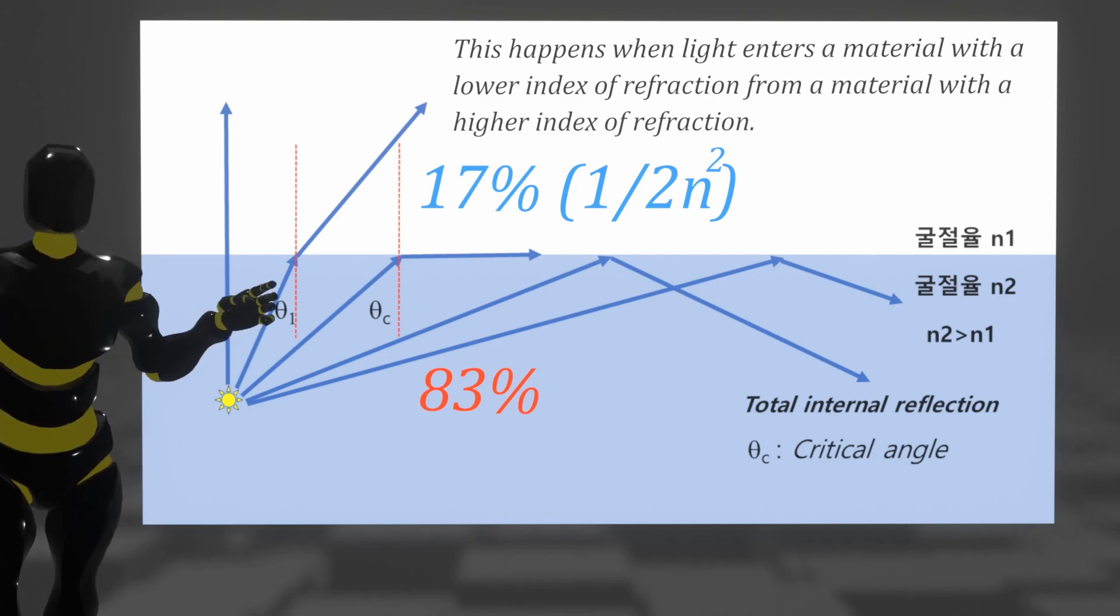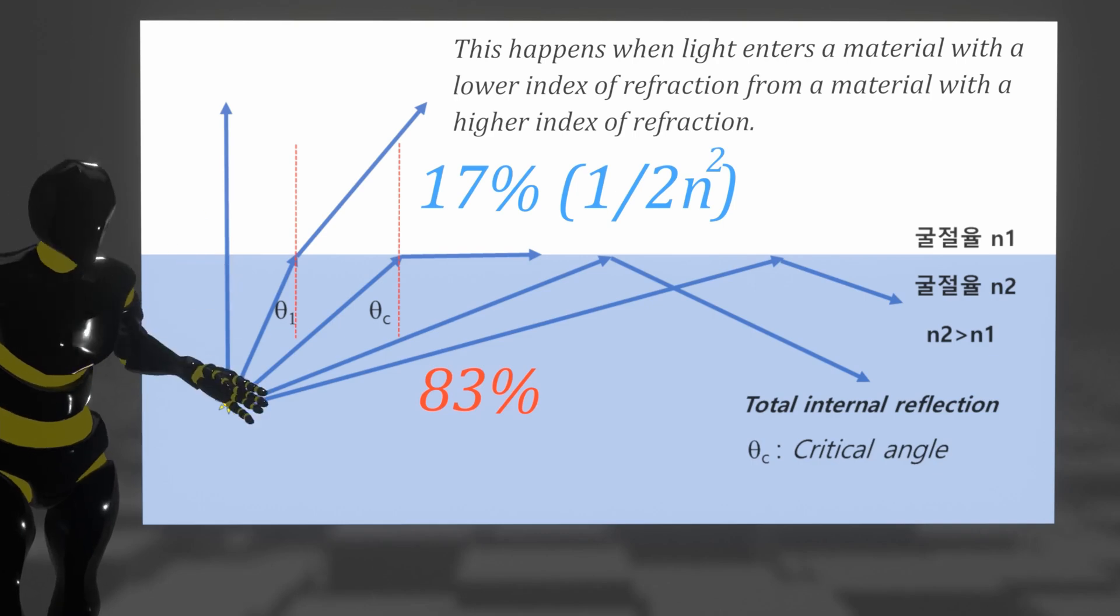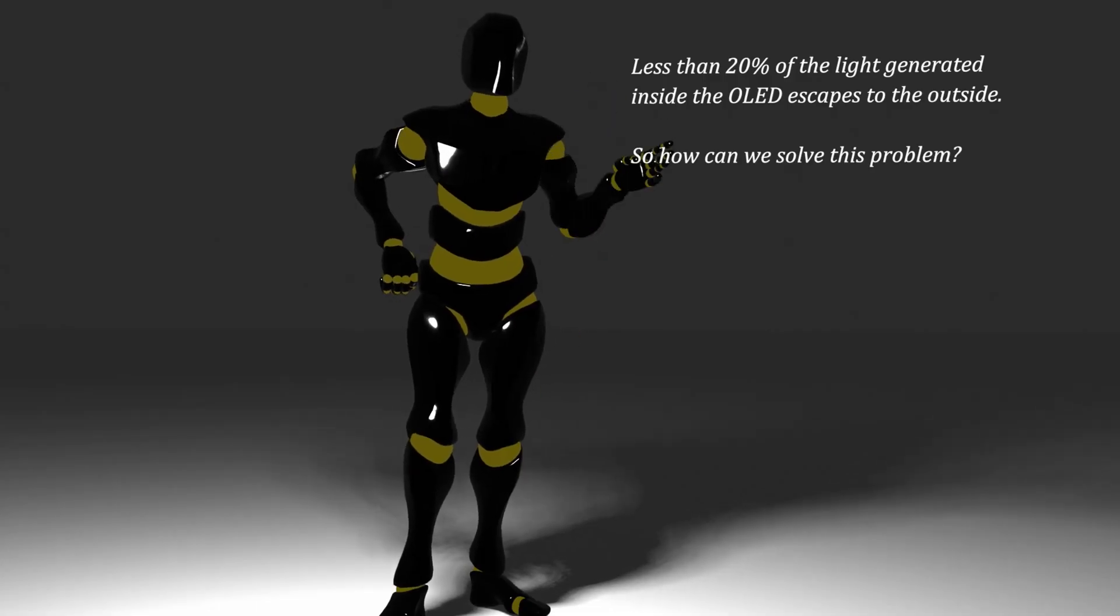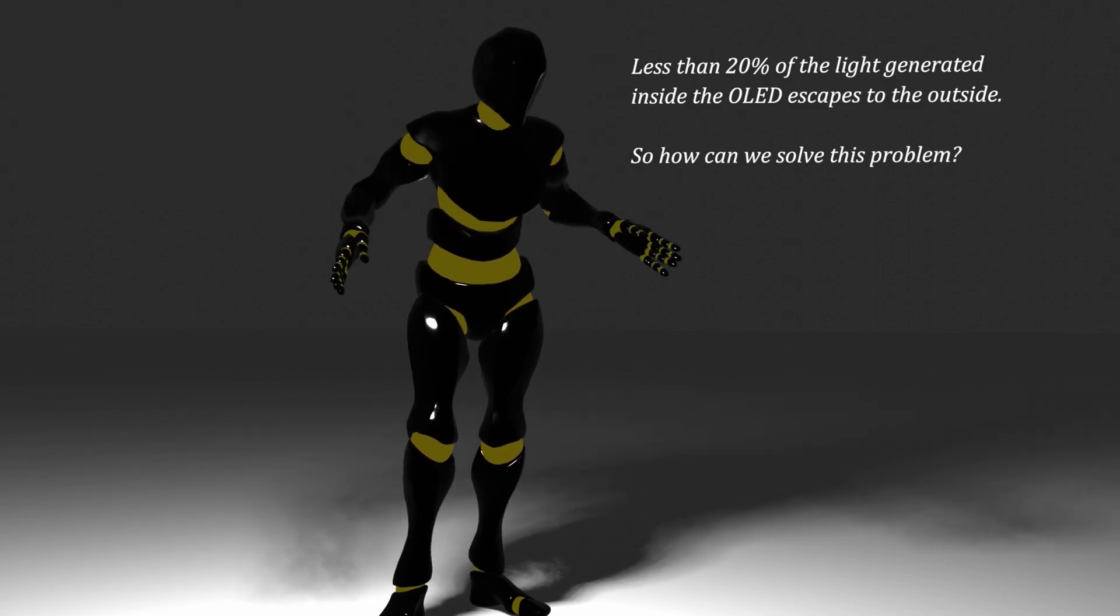Therefore, if 1.7, which is the refractive index of the organic light-emitting layer material, is substituted for n, it means that only about 17% is emitted to the outside. Now we know why only a fraction of the generated light is emitted out of the device.